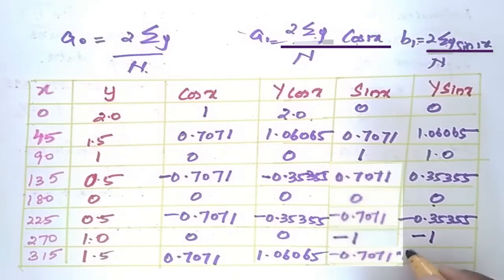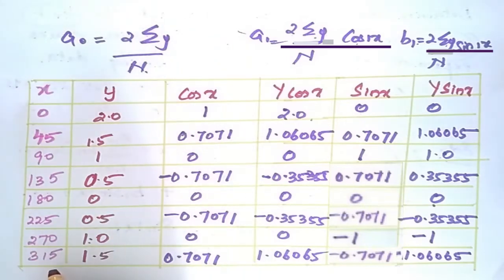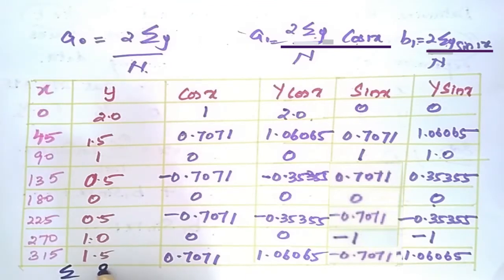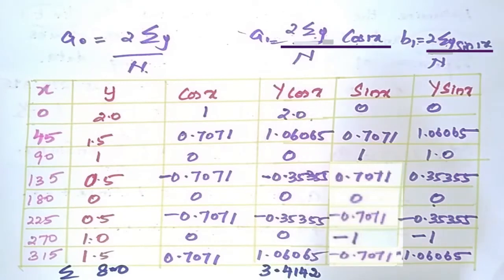The y·sin(x) column includes: -1, 1.06065. The summations are: Σy = 8.0, and Σy·cos(x) = 3.4142.